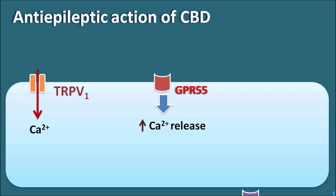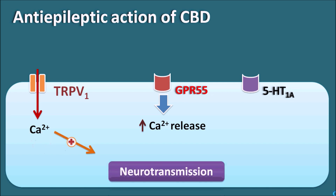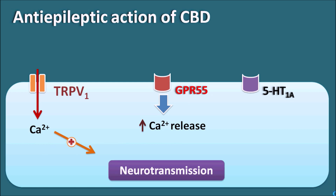Neurons are also equipped with 5-HT1A receptors which are auto-inhibitory in nature and actually prevent neurotransmission. When TRPV1 channels are activated, calcium enters neuronal cells leading to stimulation of neurotransmission. GPR55 receptors can also increase intracellular calcium release, which also increases neurotransmission. But when 5-HT1A receptors are activated, because they are auto-inhibitory, they can prevent neurotransmission. In this way neurotransmission can be controlled by 5-HT1A receptors and increased by TRPV1 as well as GPR55 receptors.